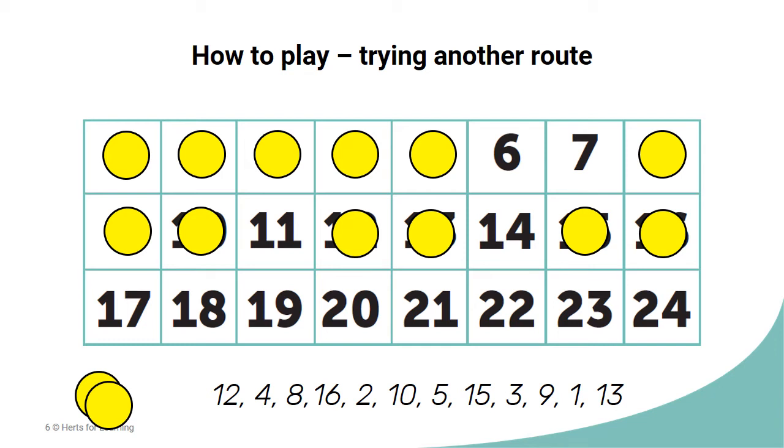Children could be tasked to find if there is a best or worst number to start on, or a most useful or least useful number to land on. Is it possible to cover up all of the numbers? Why? Why not?